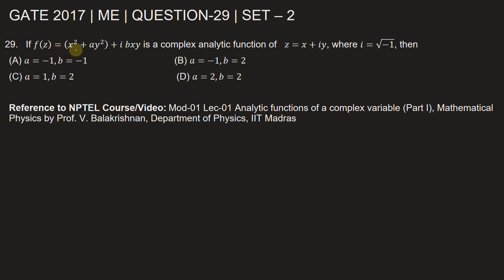If f of z is equal to x squared plus a y squared plus iota b x y is a complex analytic function of z equals x plus iota y, then we need to find the value of a and b.